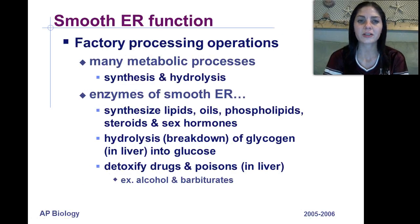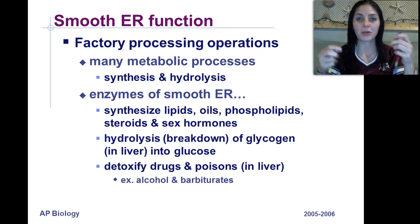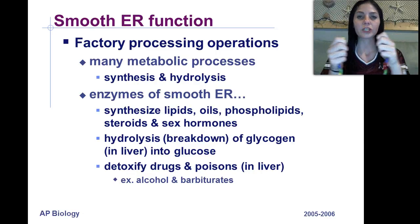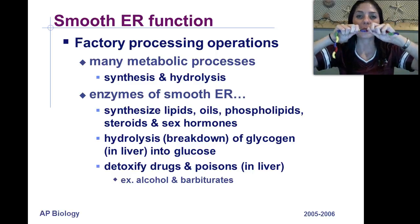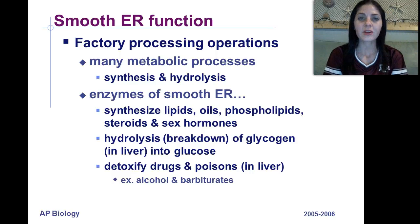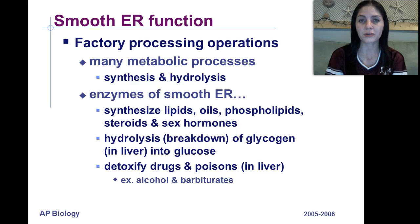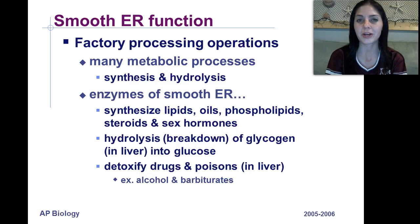It's a factory processing operation. Many metabolic processes occur in the endoplasmic reticulum — we have synthesis, meaning we're putting molecules together by removing water, and hydrolysis, adding water to split. The main function of the smooth ER deals with fats. So we synthesize lipids, oils, and phospholipids. Phospholipids should sound familiar because our plasma membrane is made out of a phospholipid bilayer. The smooth ER also synthesizes steroids and sex hormones.